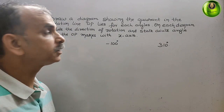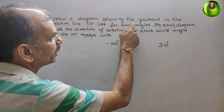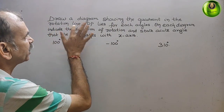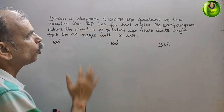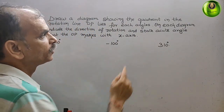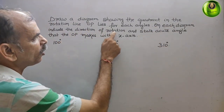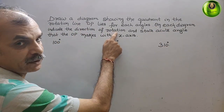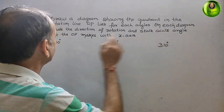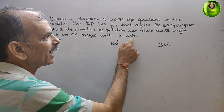Your question is: draw a diagram showing the quadrant and the rotation line OP for each angle. On each diagram, indicate the direction of rotation and state the acute angle that OP makes with the X-axis.